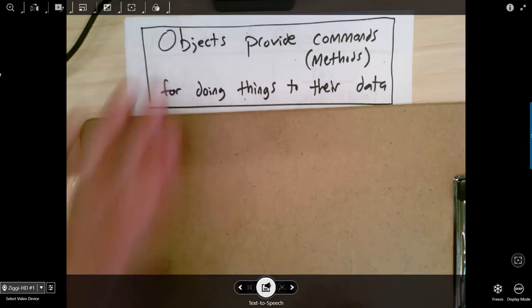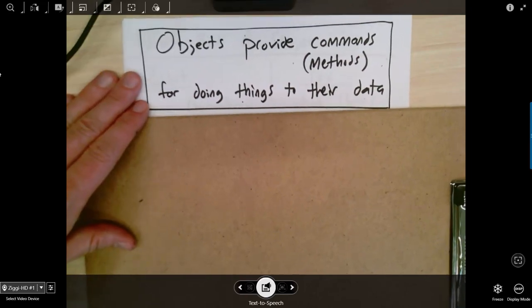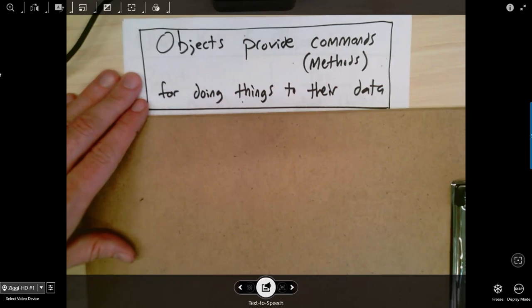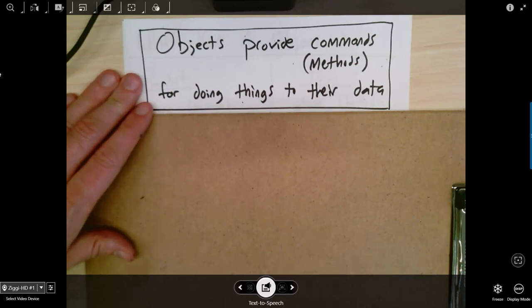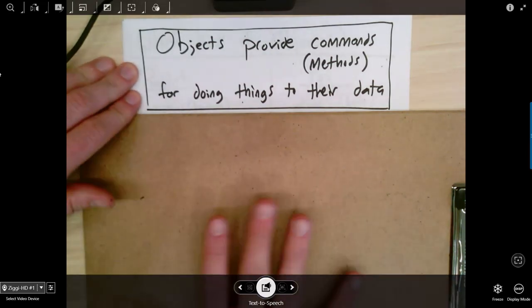I'd said just a second ago that objects are not just containers for variables. They also provide commands or methods that let other parts of the code do things with the object data. There's an organizing principle which is that every single object should be responsible for its own stuff. So other parts of the code shouldn't be changing values inside an object. Instead the objects send each other requests. So part of the code might run a command on an account object and say hey account object, could you please make the following change to your data? And then the account object gets to decide whether or not it's going to allow that. So that's sort of conceptual. What does that actually look like?